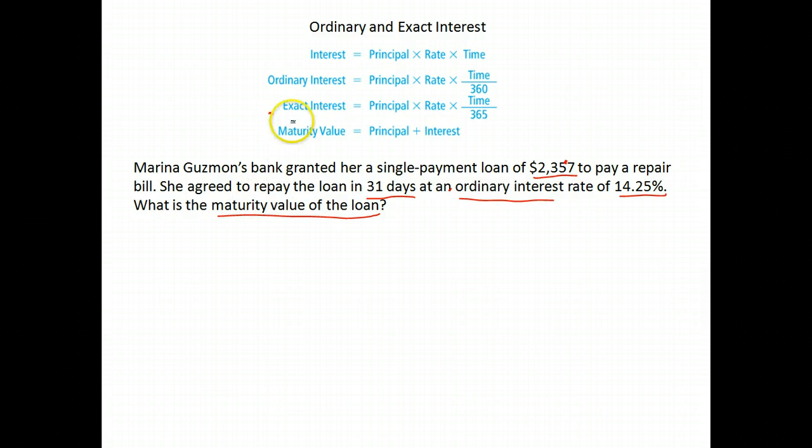That's why our maturity value is our principal, or the original amount you borrowed, because you have to pay that back, plus the interest. So we do have to find the interest first. Let's find our interest.